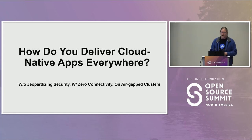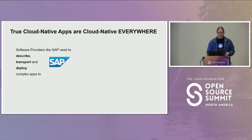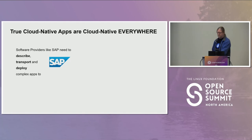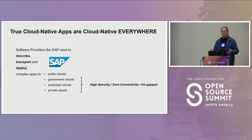The challenge: how do you deliver cloud-native apps everywhere without jeopardizing security and while dealing with potentially zero connectivity? Software providers like SAP need to describe, transport, and deploy complex apps to public cloud, private cloud, sovereign cloud, and government clouds. These last three have policies in place that prevent pulling resources from arbitrary locations — for example, Nginx may need to come from an internal private registry instead of Docker Hub.